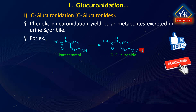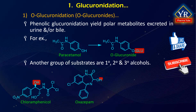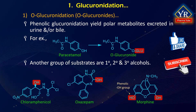A typical drug undergoing extensive glucuronidation is paracetamol. Another major group of substrates are alcohols, be they primary, secondary or tertiary. Medicinal examples include chloramphenicol and oxazepam. Another important example is morphine, which is conjugated at its phenolic and secondary alcoholic groups to form the 3-O-glucuronide, which is a weak opiate antagonist, and the 6-O-glucuronide, which is a strong opiate agonist, respectively.